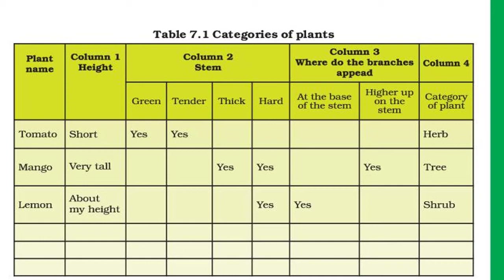For tomato, the height is short. The stem is green and tender, so the category is herb. For mango, it is very tall with a thick and hard stem, branches higher up on the stem — so it is a tree. For lemon, it is about my height, the stem is hard, branches appear at the base of the stem — so it is a shrub.